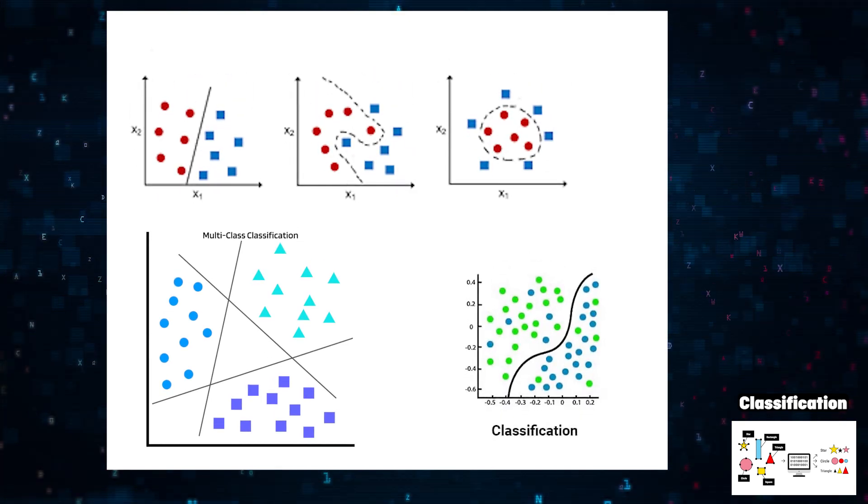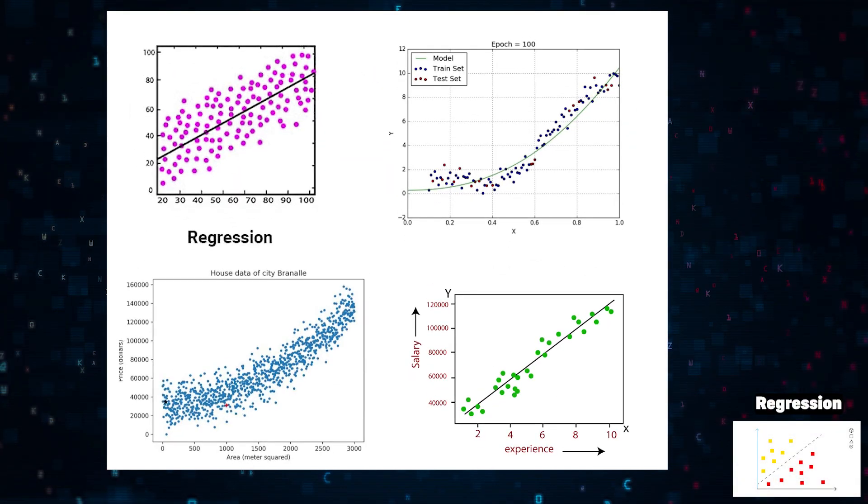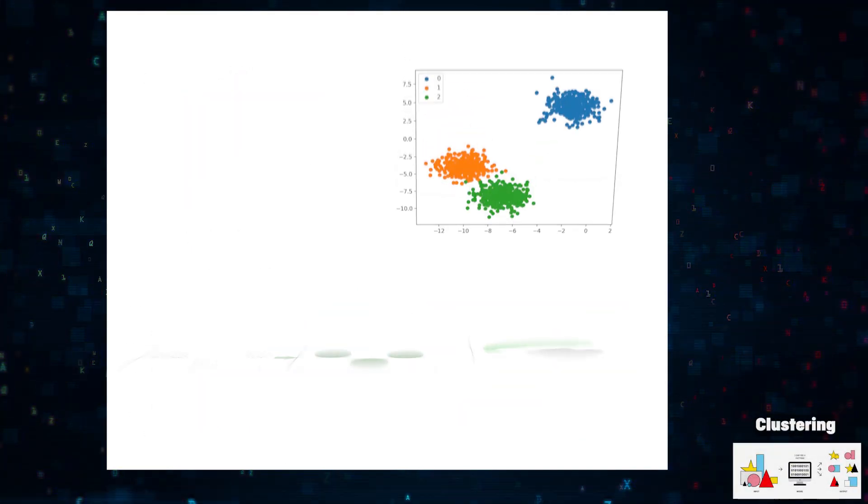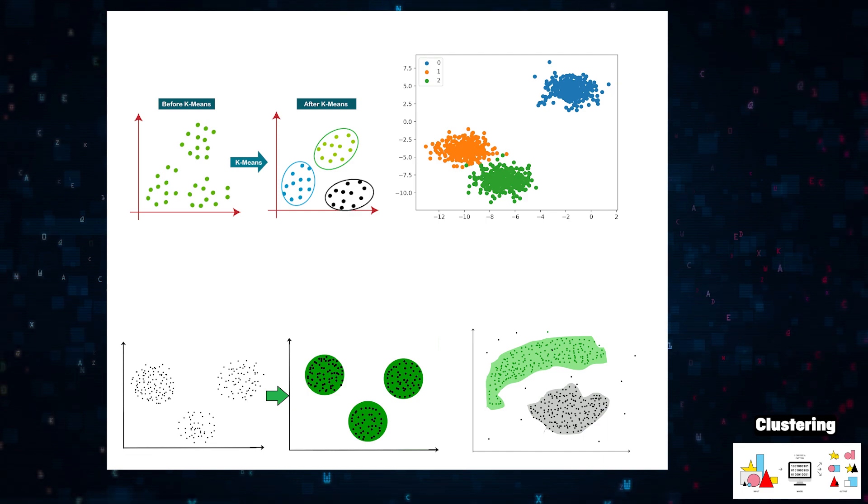Classification focuses on grouping or labeling items. Regression attempts to understand a trend and predict numerical variables. And clustering is all about trying to group objects together.